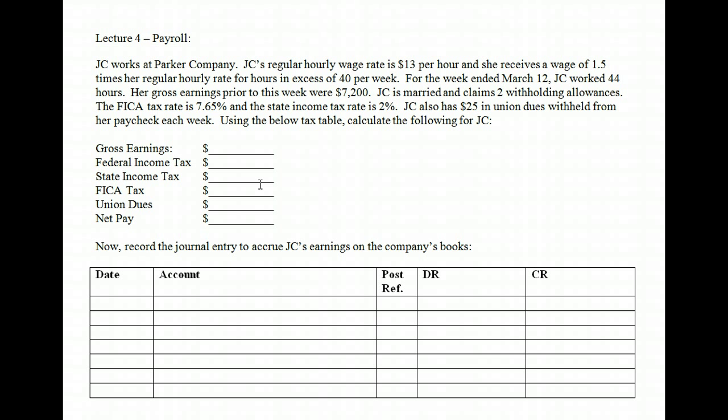An employer withholds your federal income tax specifically based on your W-4 form. So if you put single or married, they tax you based on your rate. If you went in and put married with five kids but you're really a single person, odds are you're going to still owe taxes. That is not the employer's fault — that is your fault for declaring that on your W-4. The employer is only responsible for collecting taxes based on what you tell them to collect.